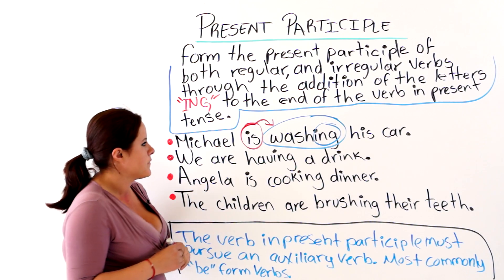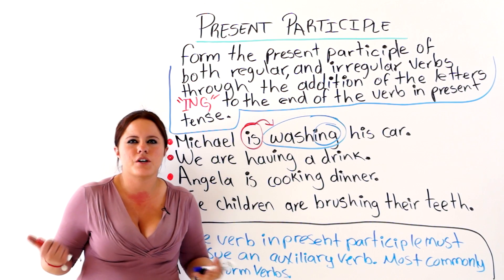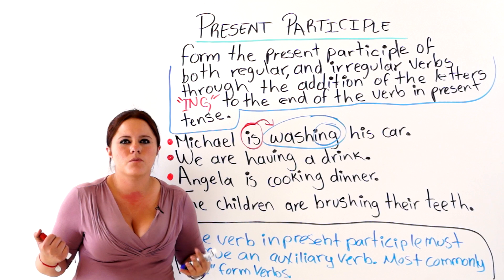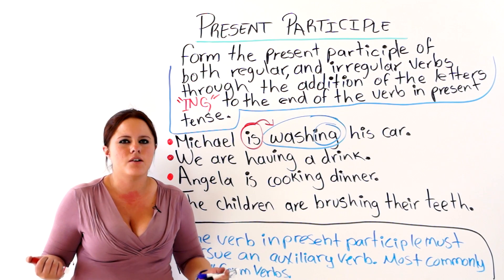But we are going to focus on the present participle form of the verbs. Washing. Some people think these are gerunds, but they only work as gerunds when they are working in a part of speech or in a sentence as a noun.